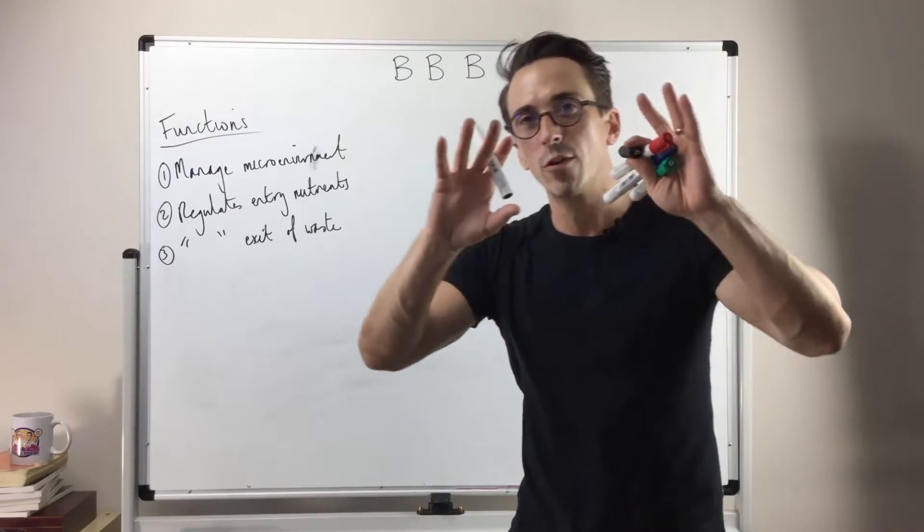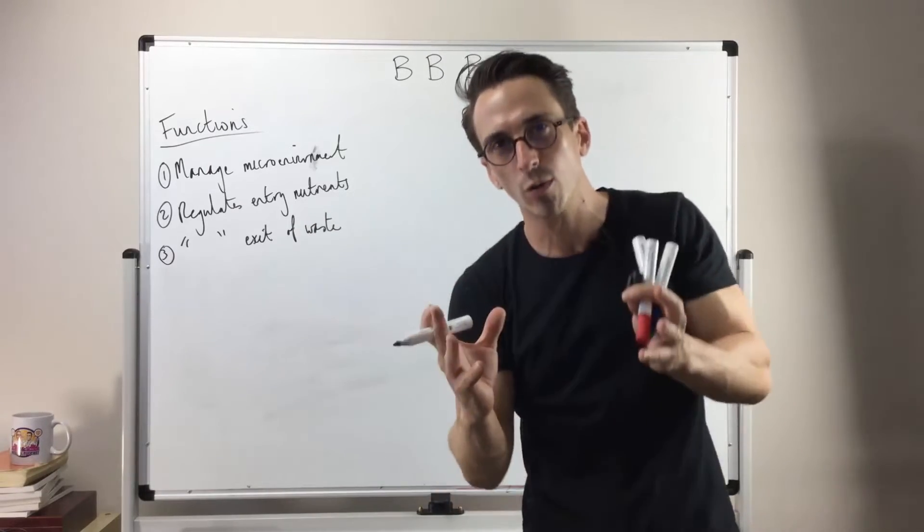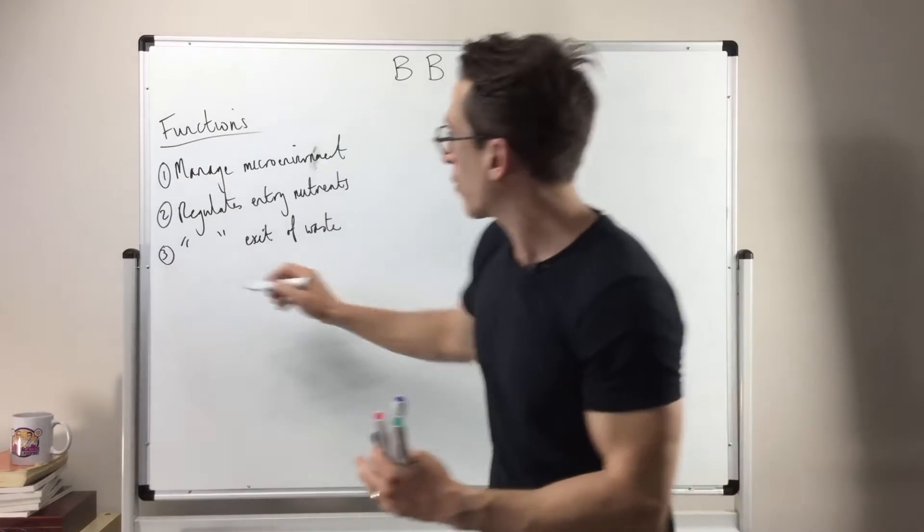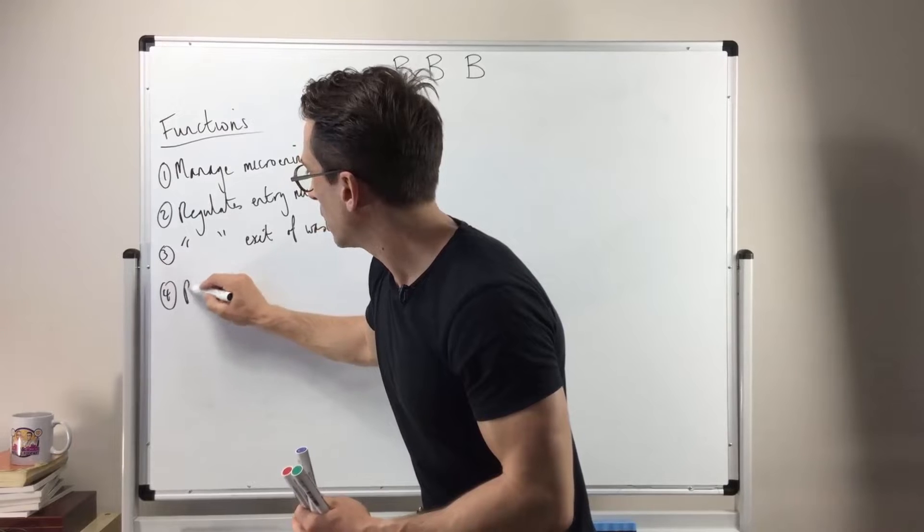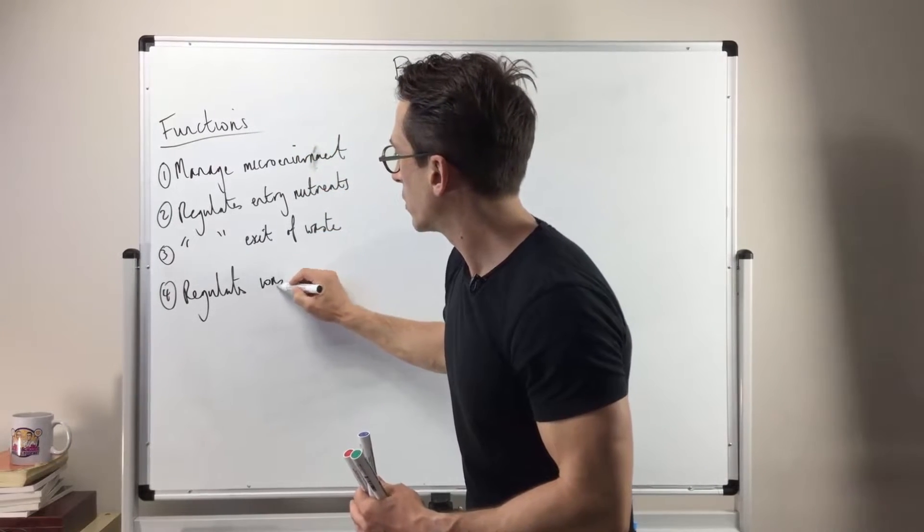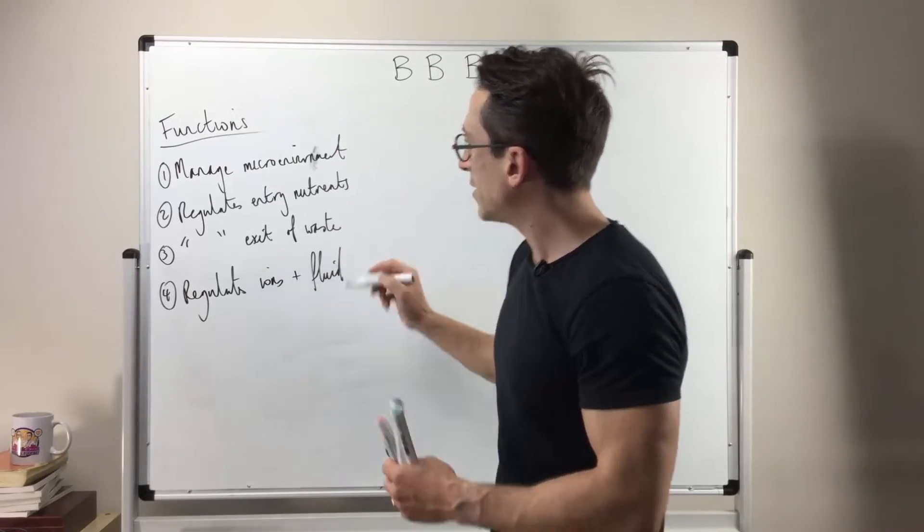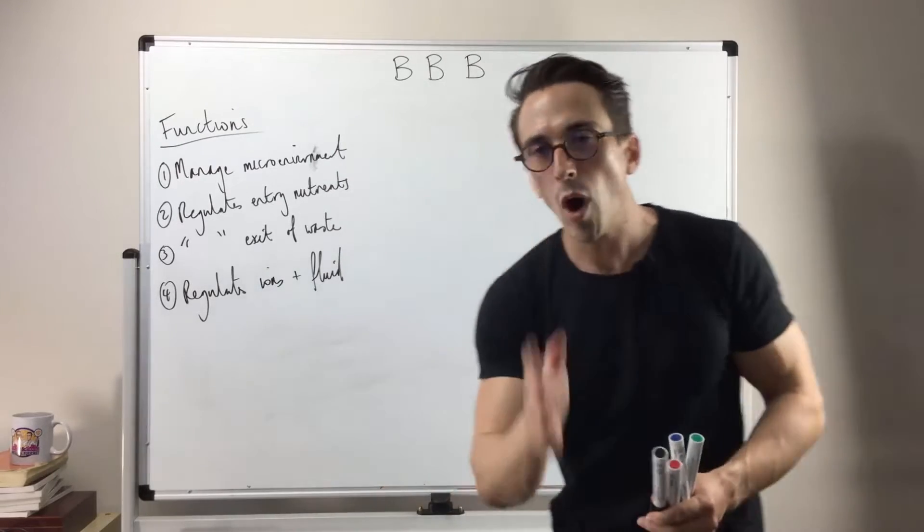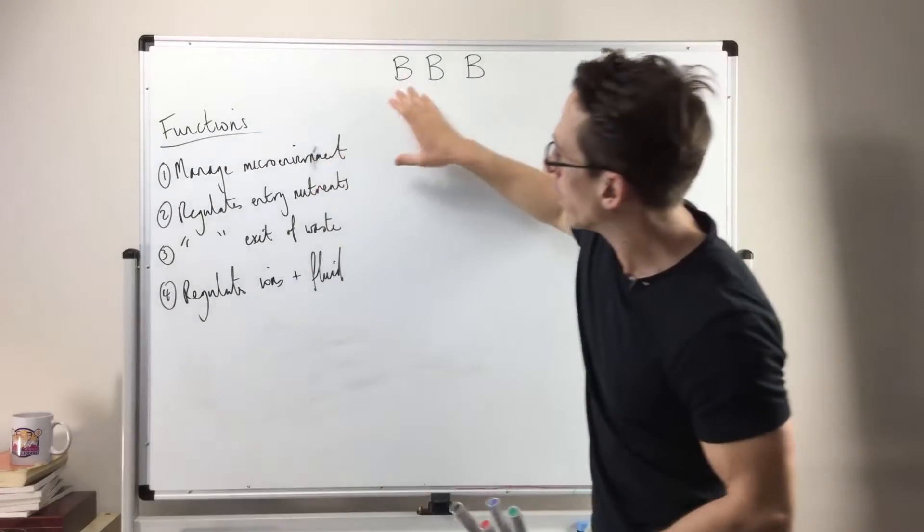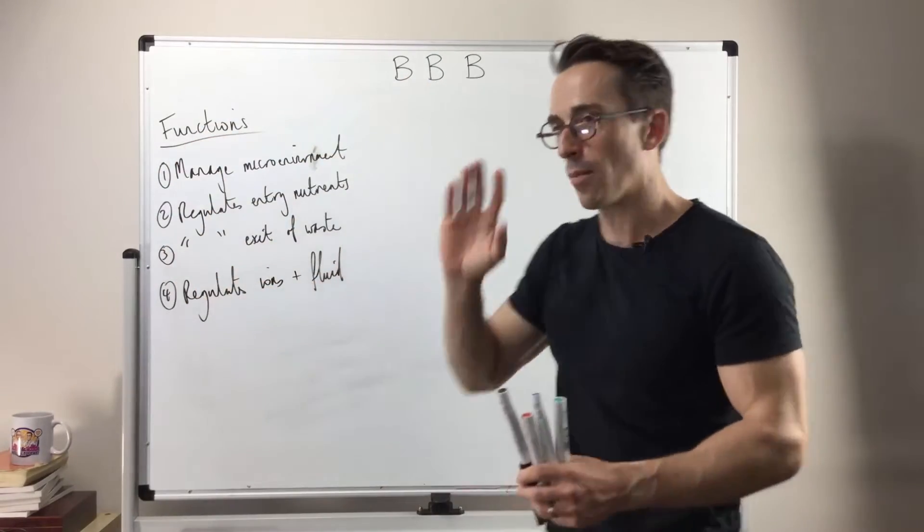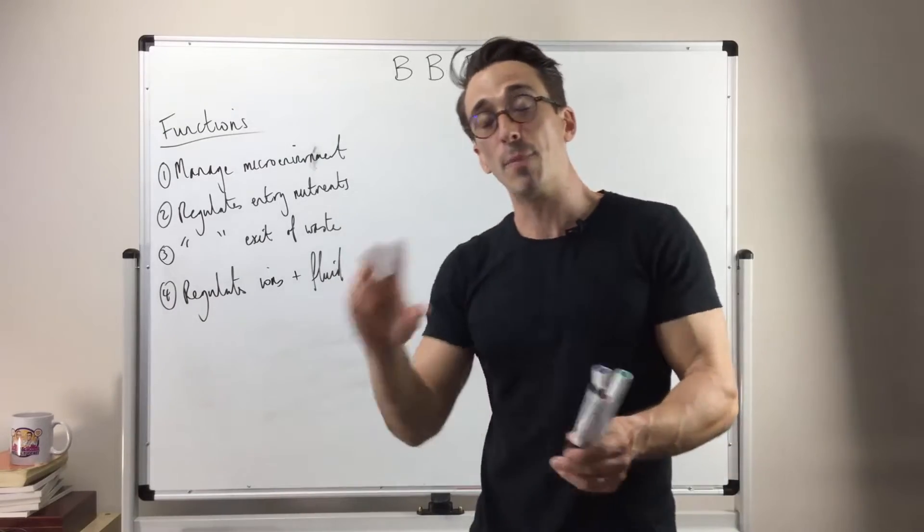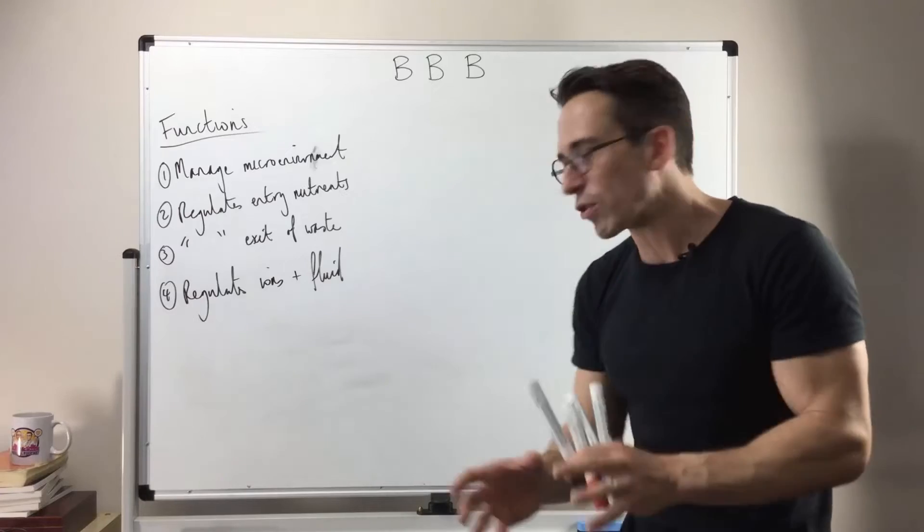Now most tissues you have free movement of ions and fluids, but we want very specific, very controlled amounts of ions and fluids moving into and out of the brain parenchyma. So it regulates ions and fluid. As you can see there's a wide variety of functions of the blood-brain barrier, but most of them are involving managing this microenvironment in a number of different ways.